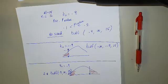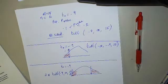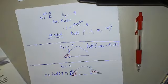And if it's two-sided and t0 is equal to 0.9, then it's this plus that. So two times tcdf 0.9, comma infinity, comma 15 degrees of freedom.